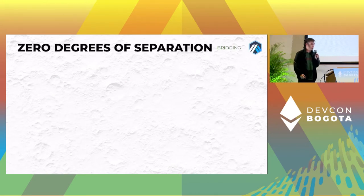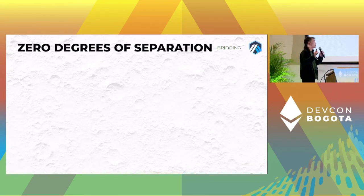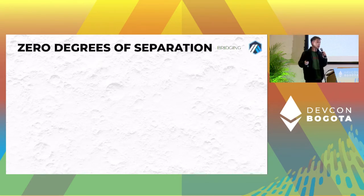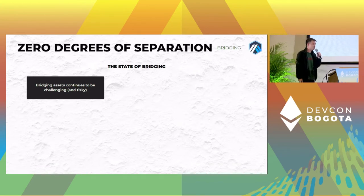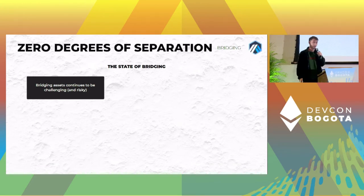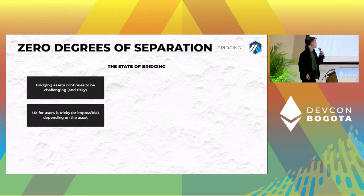Bridging — you've got to move funds from layer one to layer two. At some point, this shouldn't be something you have to think about. We want there to be zero degrees of separation between the layers at some point in the end game. You bridge right onto layer two. Here's where we are today — the state of bridging continues to be really challenging, really risky. We see hacks all the time.